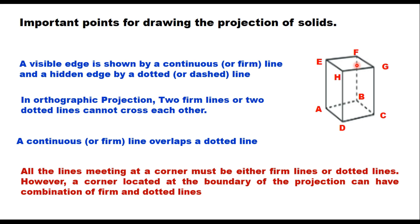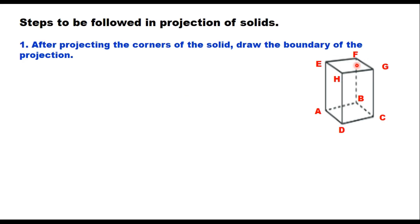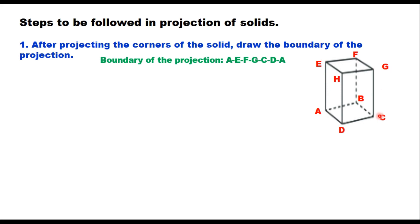There are four steps to follow when drawing projections of solids, and they must be followed in this sequence. The first step is: after projecting the corners of the solid, draw the boundary of the projection. For example, placing the solid in the horizontal plane gives eight points A, B, C, D, E, F, G, H in elevation. The boundary is the outermost outline — here A–E–F–G–C–D–A forms the boundary of the projection.